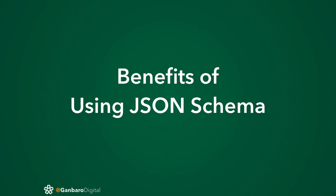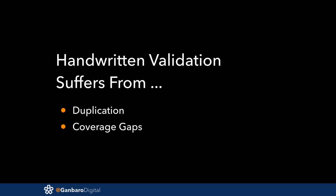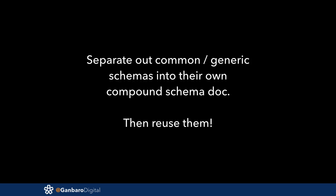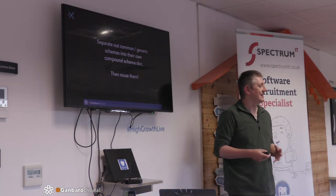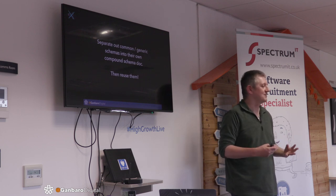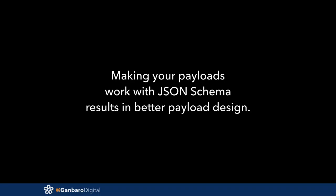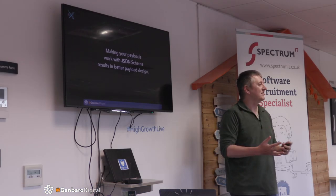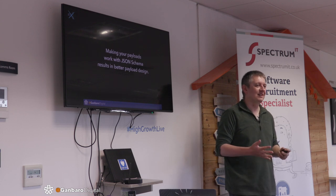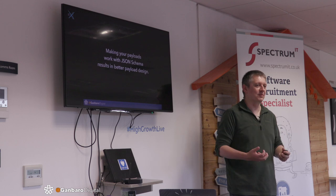Finishing off with the benefits. My pet hates about handwritten validation — hopefully I've shown we've addressed both of those with JSON Schema. You can build up your own internal dictionaries and reuse them, which is very handy. If any of you find existing schemas and dictionaries to use, share them. Also — I'm not trying to retrofit this to an existing system, and I'm well aware how lucky I am in this.